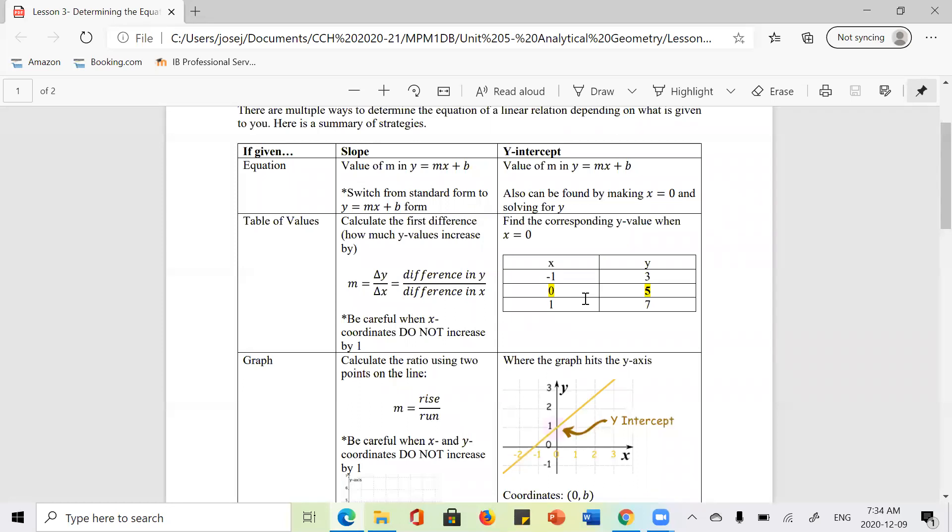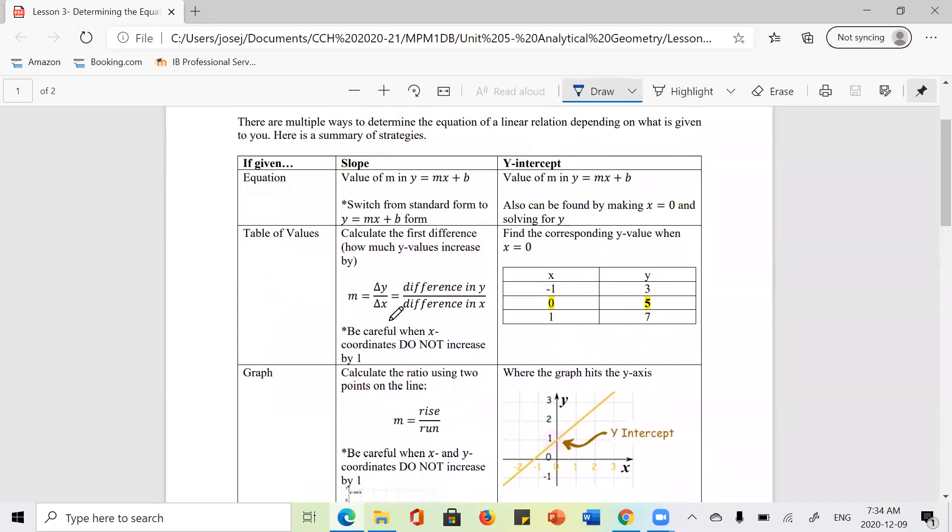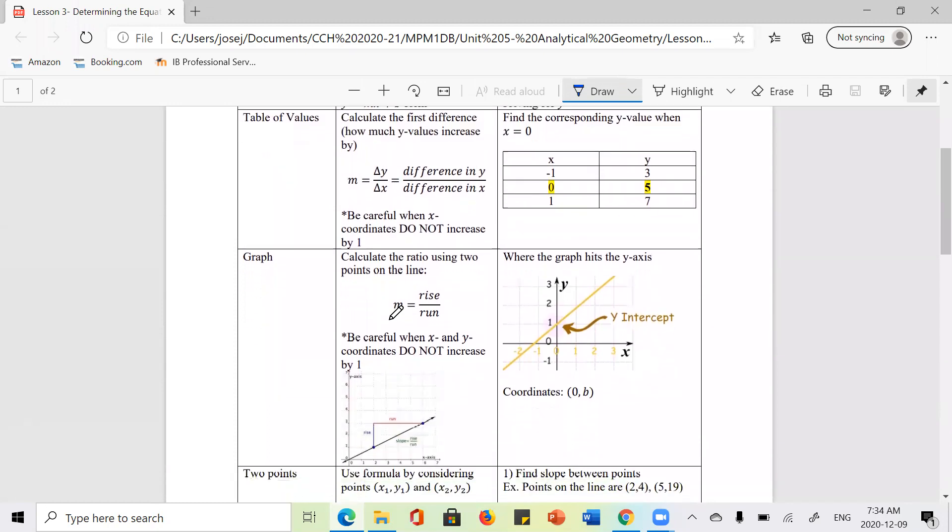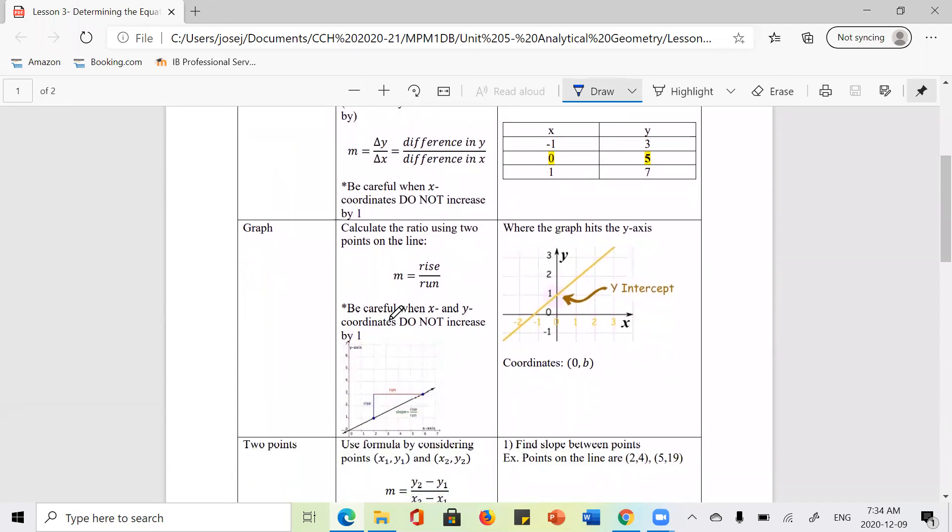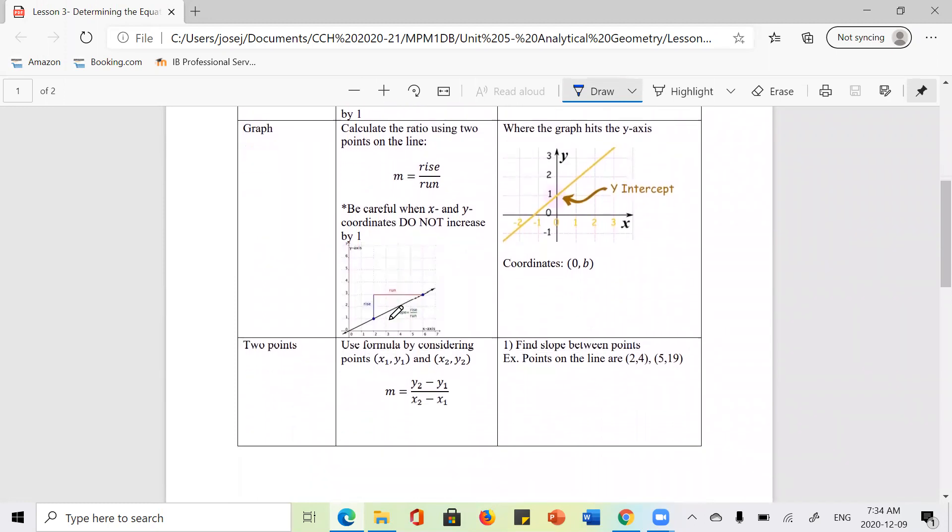In the table values, it's quite easy. Slope is the first difference. The y-intercept is the corresponding y-value when x equals zero. And of course, on a graph, you can calculate rise over run. Just be careful to make sure that the x-coordinates are increasing by one as well.